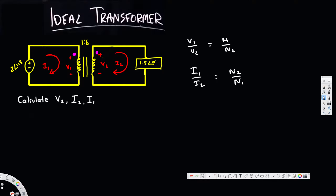For the i1 over i2 ratio, we decide whether it's positive or negative by looking at the current direction. If both currents are entering the dot it's negative; if both are exiting the dot it's negative. But if one is entering and the other is exiting, it's positive. In our case, i1 is entering the dot and i2 is exiting, so this ratio is positive.